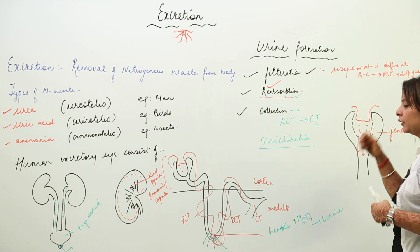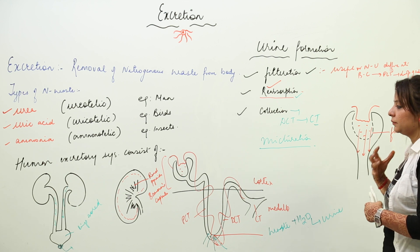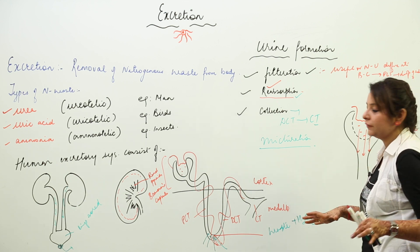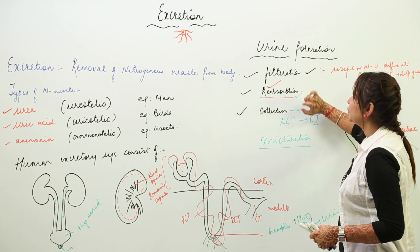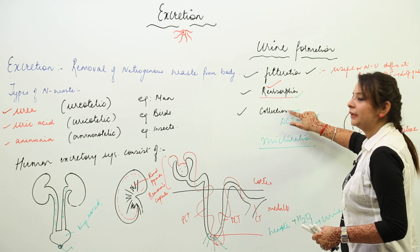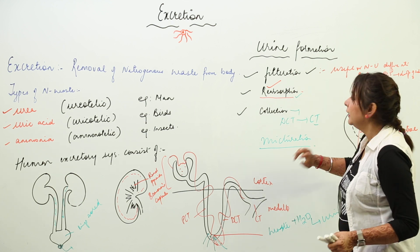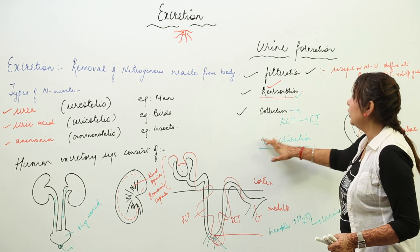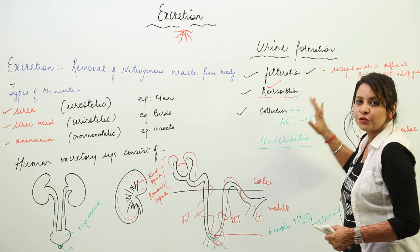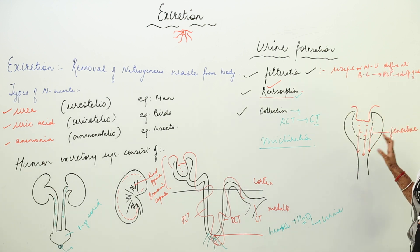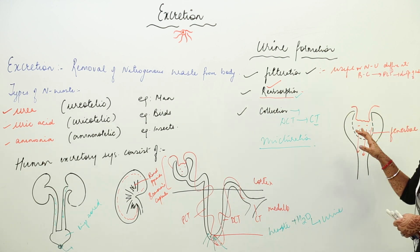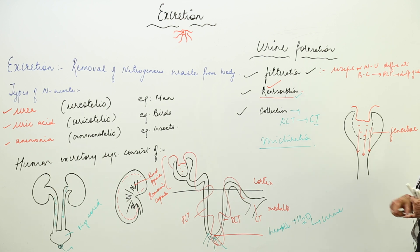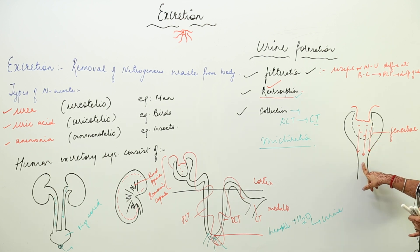To summarize: urine formation consists of three parts — filtration, reabsorption, and collection. In filtration, all substances present in the glomerulus blood flowing in the Bowman capsule, whether useful or non-useful, just diffuse through the fenestra into the Bowman capsule, and through the PCT reach the loop of Henle.